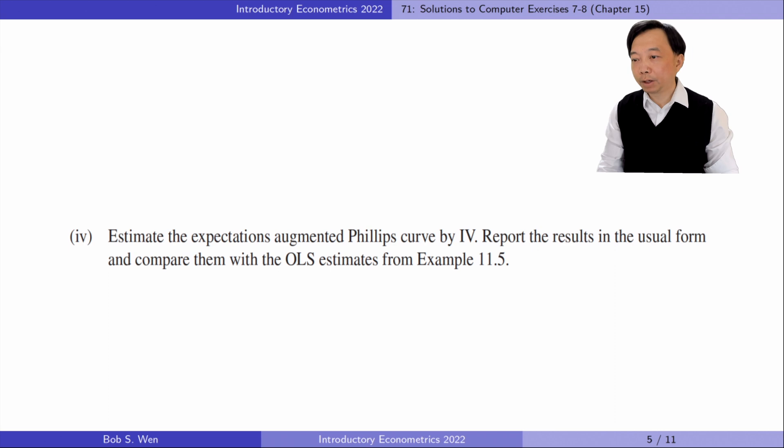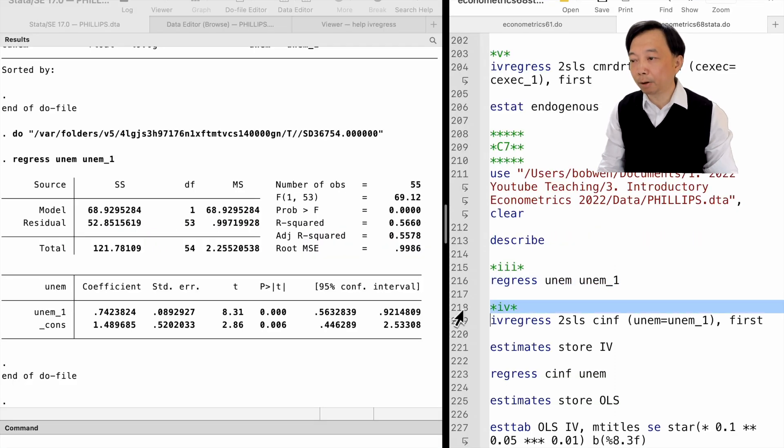In part 4, we estimate the expectations augmented Phillips curve by IV. Report the results in the usual form and compare them with the OLS estimates from example 11.5.